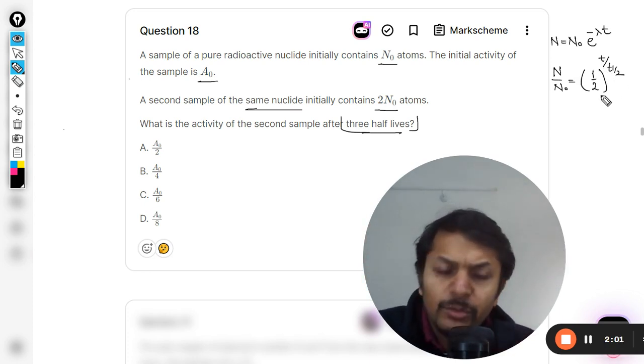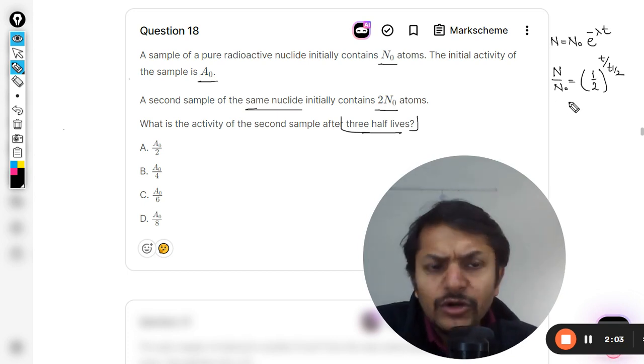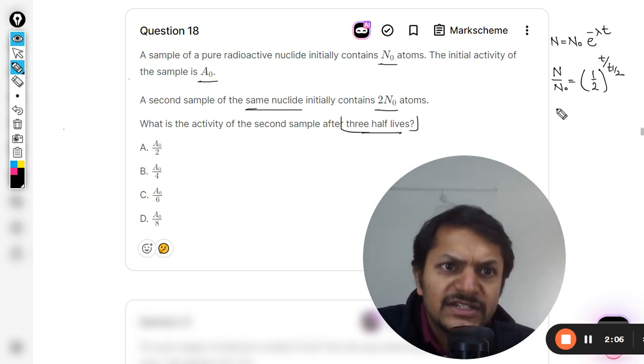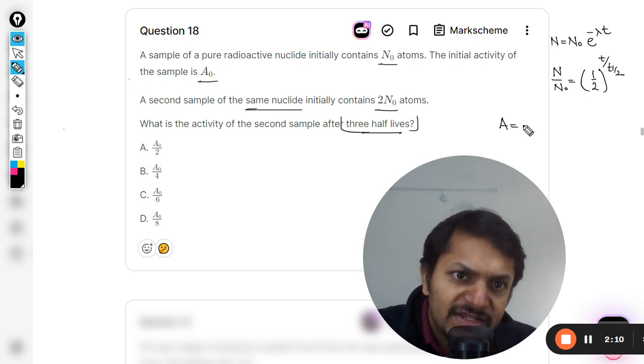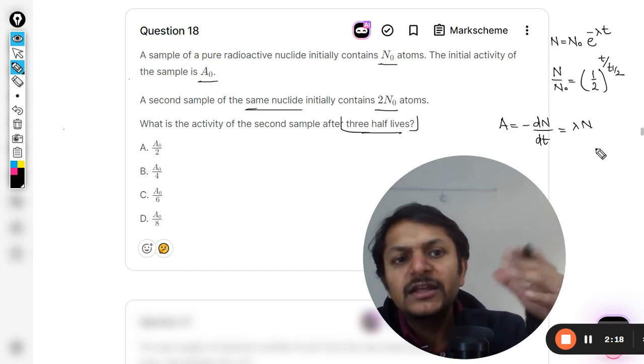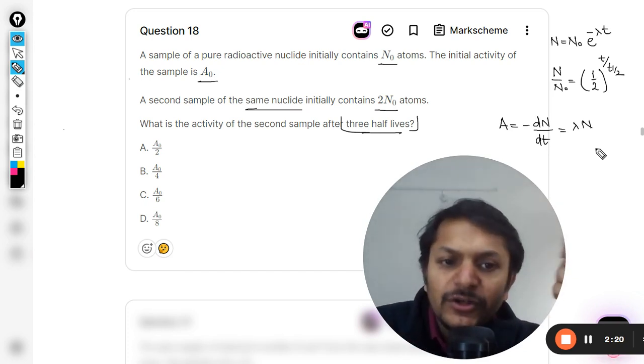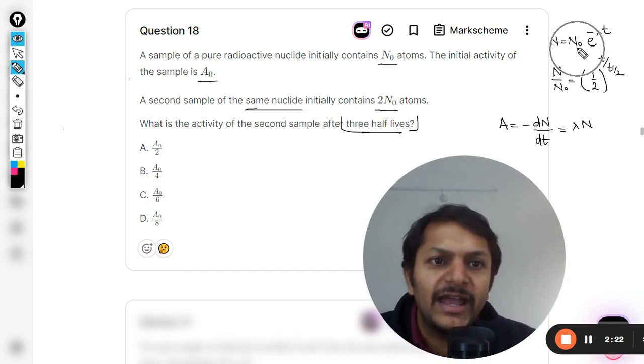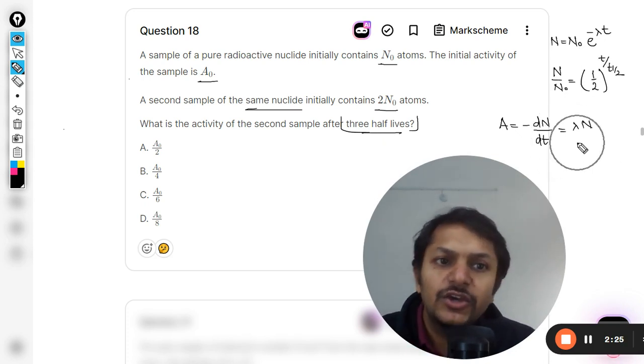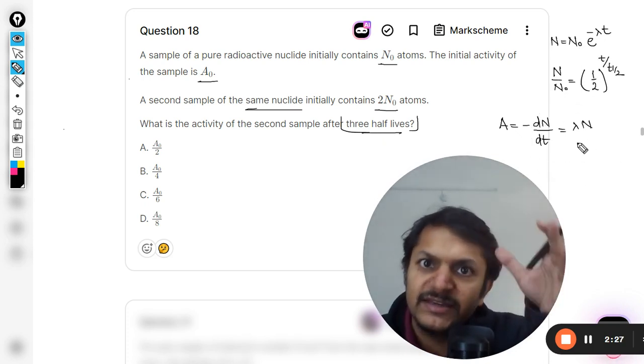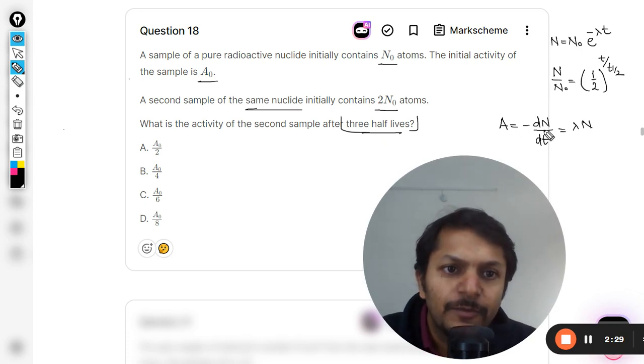Now there is another thing which is activity. Activity is defined as negative dN/dt, and this equals λN. This comes from the derivation—when you are deriving N = N₀e^(-λt), you get this. This is the point where you start.